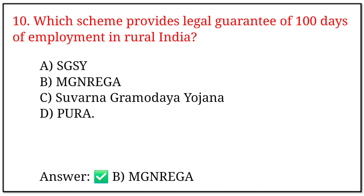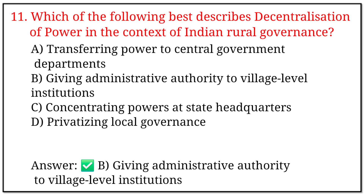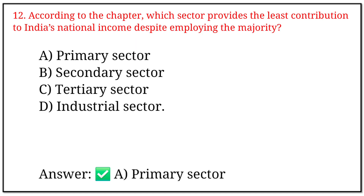10. Which scheme provides a legal guarantee of 100 days of employment in rural India? Options a, b, c, and d. The correct option is b: MNREGA. 11. Which of the following best describes decentralization of power in the context of Indian rural governance? The correct option is b: giving administrative authority to village-level institutions. 12. According to the chapter, which sector provides the least contribution to India's national income despite employing the majority? The correct option is a: primary sector.